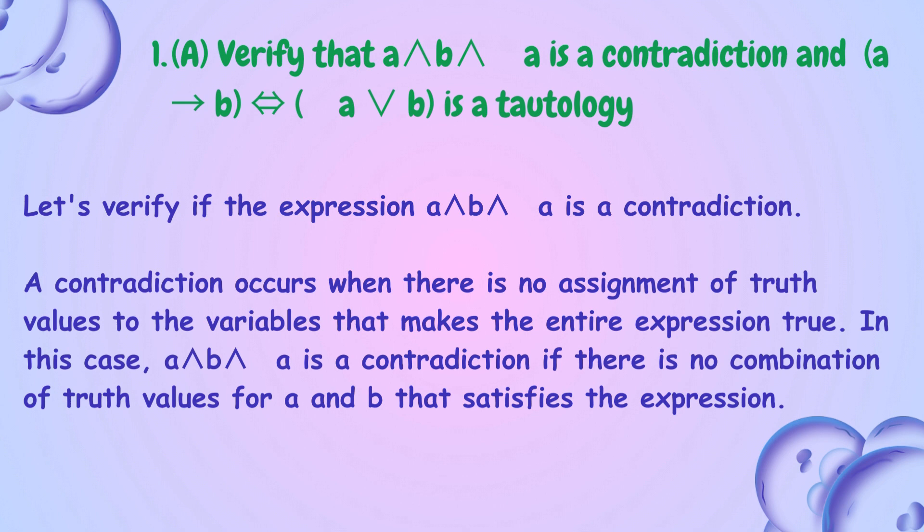The first question: verify if the given two-variable expression is a contradiction, and also verify whether the given two-variable expression is a tautology. A contradiction occurs when there is no assignment of truth values to the variables that makes the entire expression true. ABA is a contradiction if there is no combination of truth values for A and B that satisfies the expression.